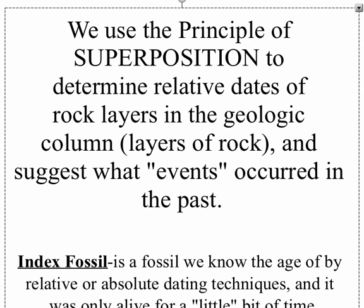We use the superposition law to determine the relative dates of rock layers in a column — oldest at the bottom, youngest at top — and therefore suggest what geologic events occurred in the past to form those rock layers and how things have changed.